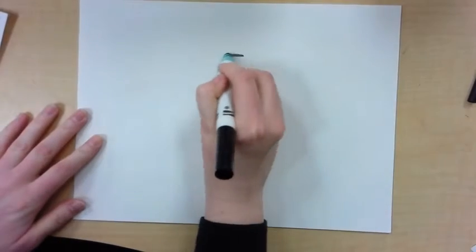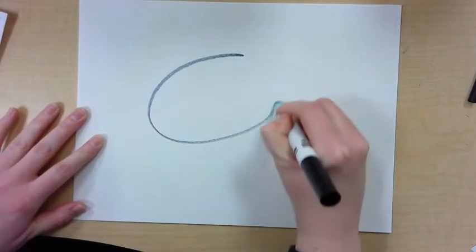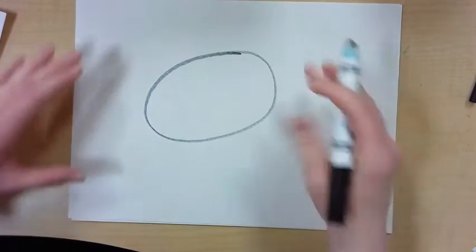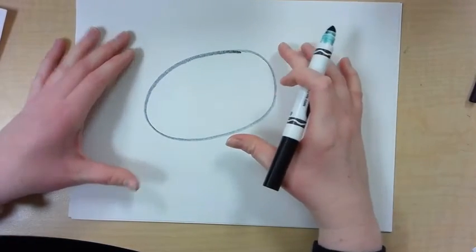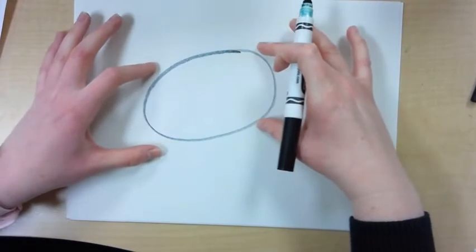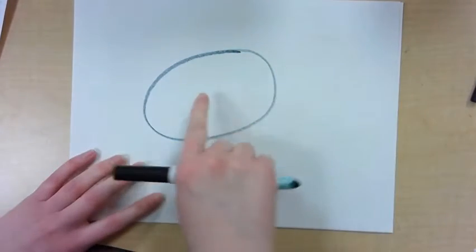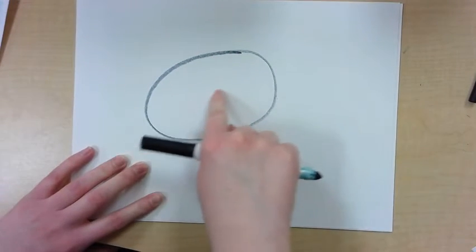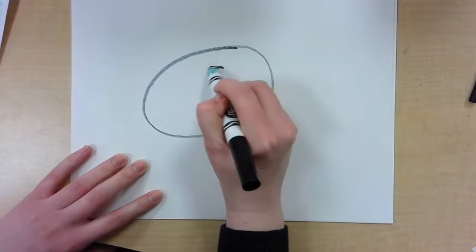So we're gonna start with a big oval. Don't make it a complete circle, make it an oval, so it kind of looks like a circle that got stretched out. And then inside, in the middle, a little bit higher up from the middle, make another oval.